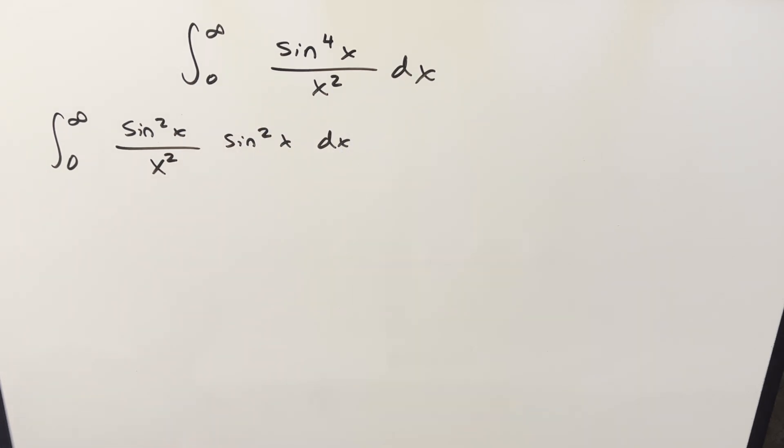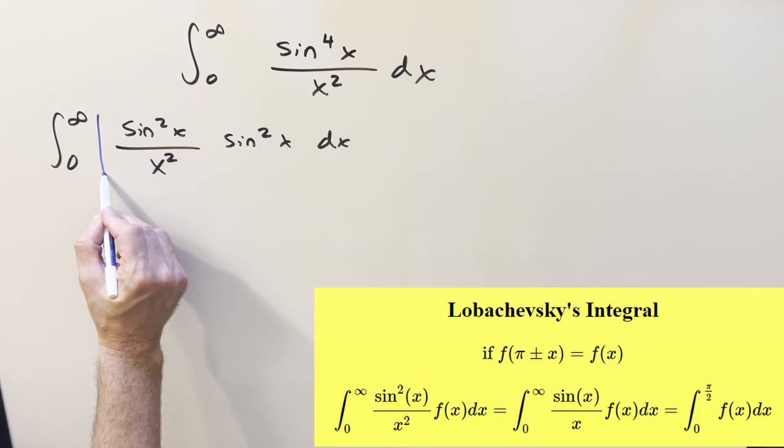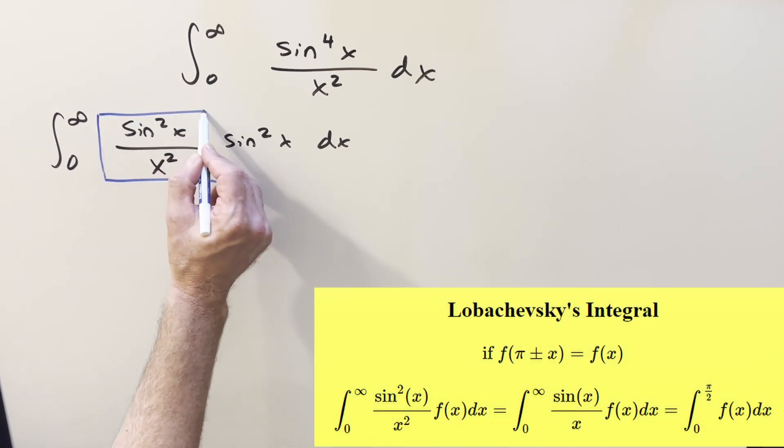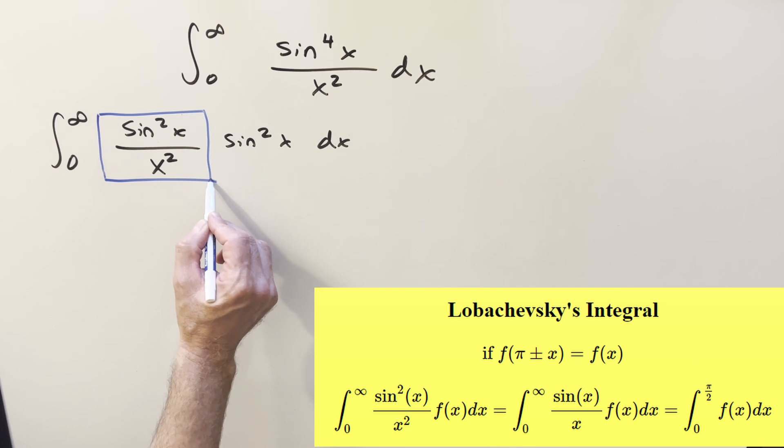And now that we have it written like this, we can use Lobachevsky's integral on this. All I need to do is just notice this here is in perfectly the right form, sine squared over x squared.